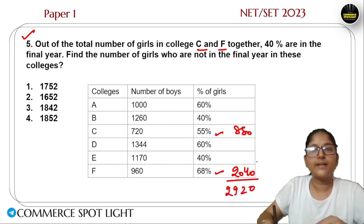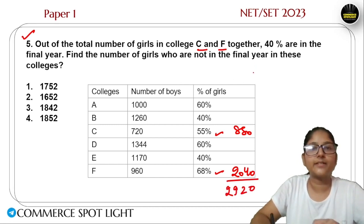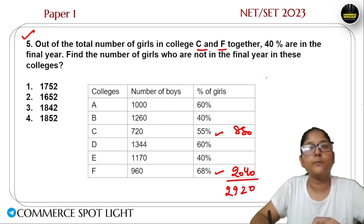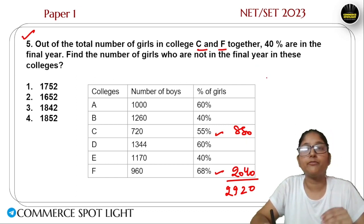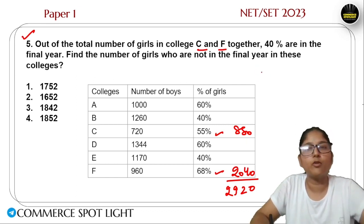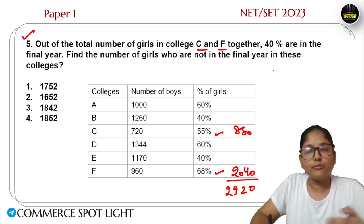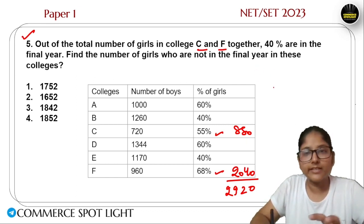The girls in C and F are 40% of the final total. That means the remaining students are 60%. So total girls minus C and F girls: 60% of the overall. So we take 60% of 2920, which means 2920 multiplied by 60 divided by 100.